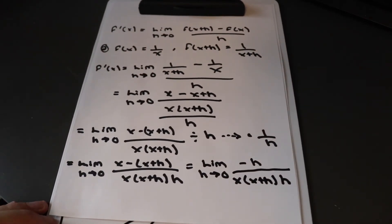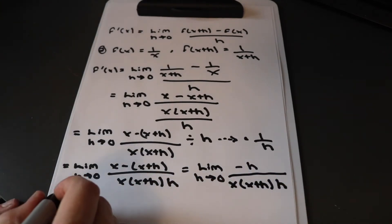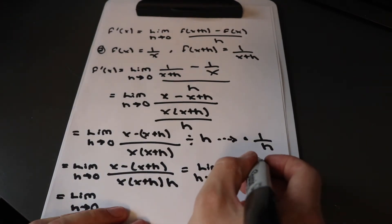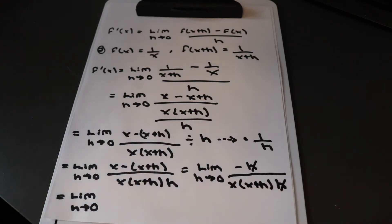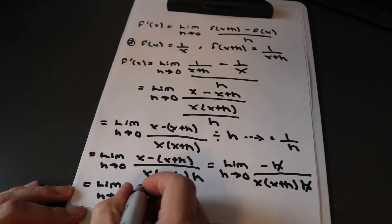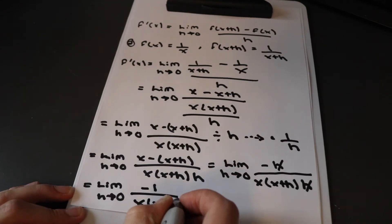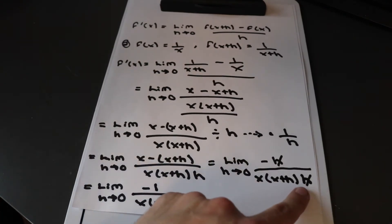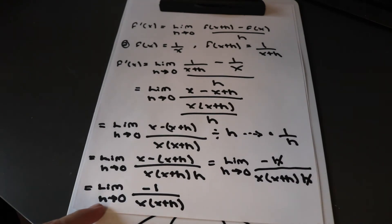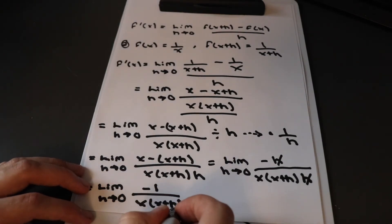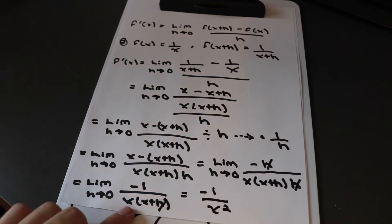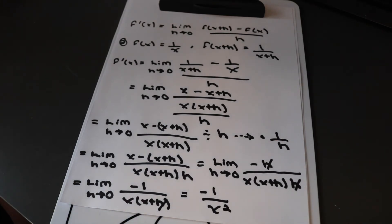Now we simplify. x minus x is zero, and we have negative h in the numerator. So we get the limit as h approaches zero of negative h over x times x plus h times h. We cancel the h's, leaving negative 1 in the numerator over x times x plus h. Applying h equals zero, the h term disappears, giving us f prime of x equals negative 1 over x squared.